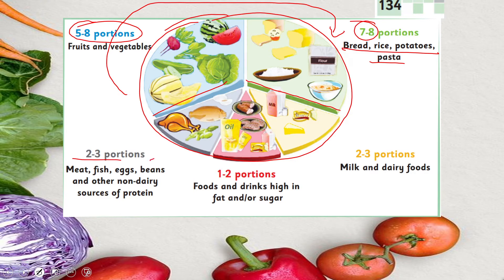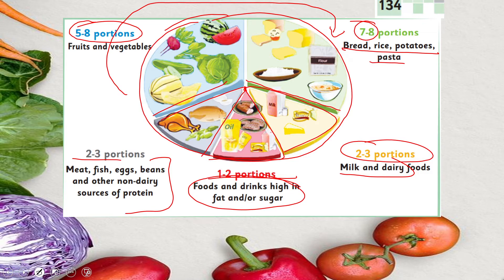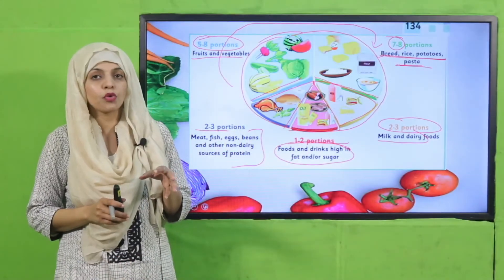Then 2 to 3 portions: meat, beans and non-dairy products. Then 1 to 2 portions: sugary food and fats. And then comes 2 to 3 portions: milk and dairy. So your most important portions are fruits and vegetables and bread, rice, potato and pasta, which provide you with energy and carbohydrates. The rest of the things have to be in 2 to 3 or 1 to 2 portions.